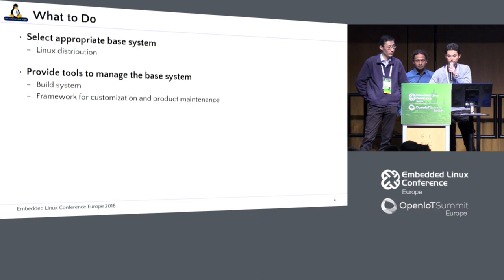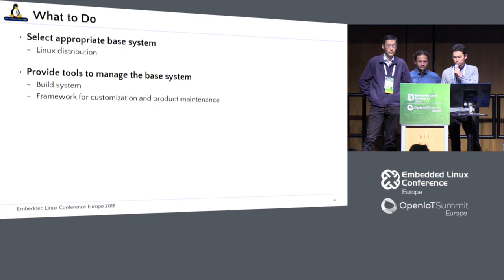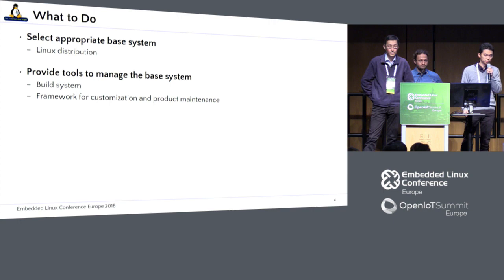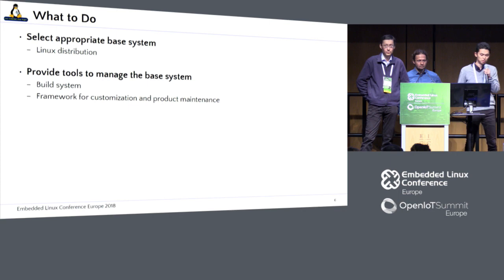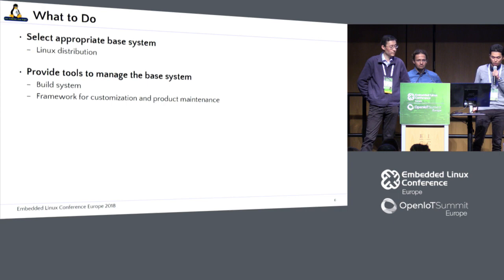So what do we need to do? First, we need to select the appropriate system to create a base system — in other words, a Linux distribution. We also need to provide some kind of tools or framework to effectively manage the base system, which sometimes becomes a required build system or framework to customize and effectively maintain the product resources.